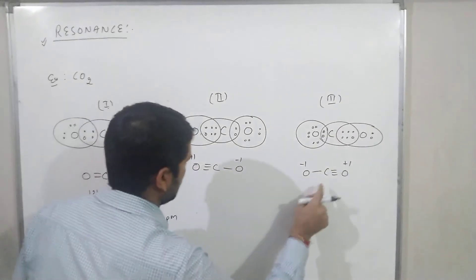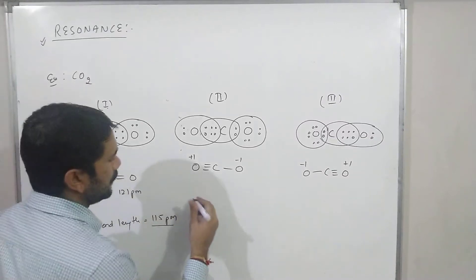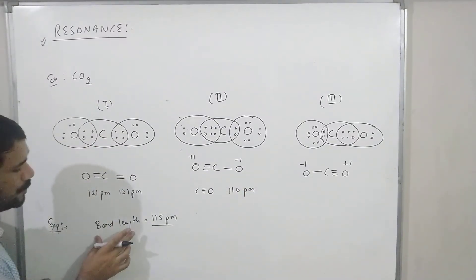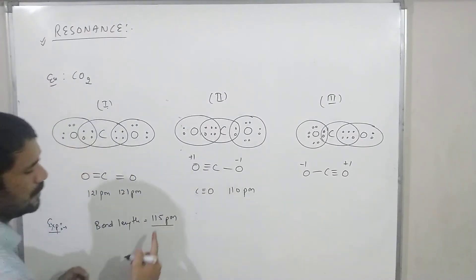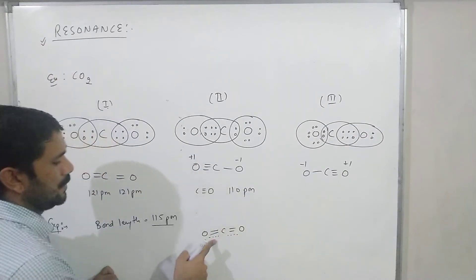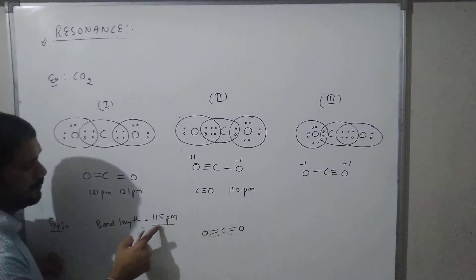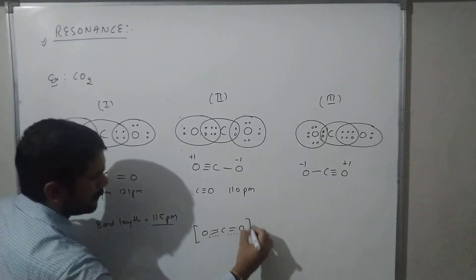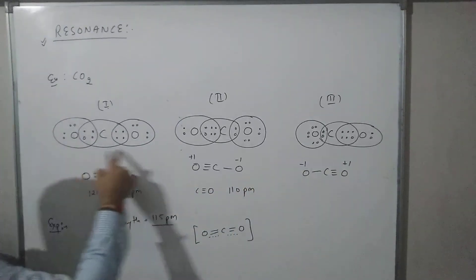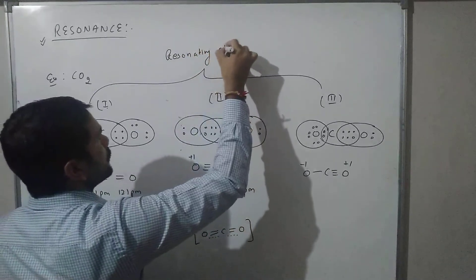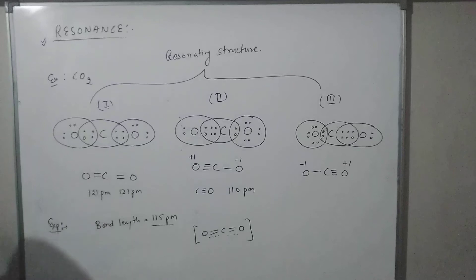The experimental results show that the bond length for C≡O (triple bond) is 110 pm and C=O (double bond) is 121 pm, but the actual CO2 bond length matches neither. The actual structure has bonds intermediate between all three Lewis structures. Therefore, we cannot show it as completely double or completely single. All three Lewis structures are called resonating structures, or contributing structures, or canonical structures of the CO2 molecule.